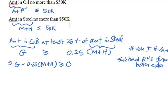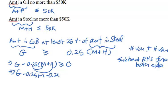We also have parentheses that need to be removed using the distributive property. So the constraint becomes: G − 0.25M − 0.25H ≥ 0. That is now a properly formatted constraint.